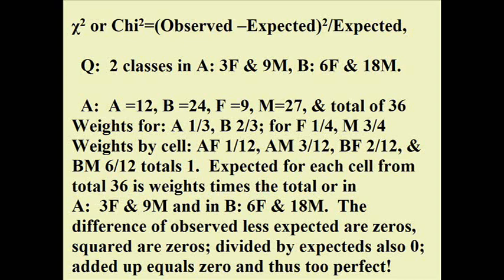Let's say we have two classes, A and B, with students who are either female or male (or finance versus marketing majors). In class A: 3 and 9 respectively; in class B: 6 and 18 respectively. Think of it as a matrix. Class A totals 12, class B totals 24. Column totals: 9 females and 27 males, grand total 36.